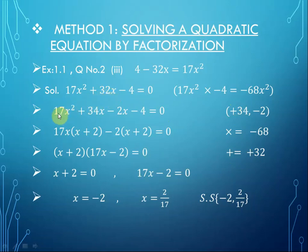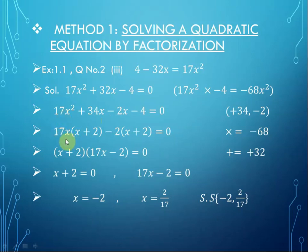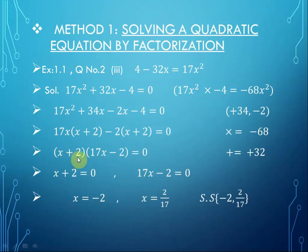These are the true factors, so using the mid-breaking method we write: 17x² plus 34x minus 2x minus 4 equals 0. Taking 17x as a common factor from the first two terms gives 17x(x plus 2), and taking minus 2 as common from the next two terms gives minus 2(x plus 2) equals 0. This gives two factors on the left-hand side: (x plus 2)(17x minus 2) equals 0.